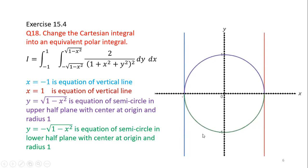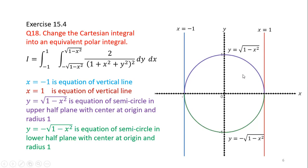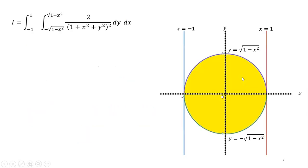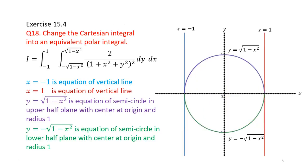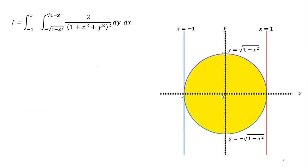Have a look here — I have used different colors for better understanding. x equals minus one is a vertical line. y equals square root of one minus x square is the upper semicircle. x equals one is a vertical line. Since the x and y axes are not involved in the boundaries, this complete circle is our required region of integration.